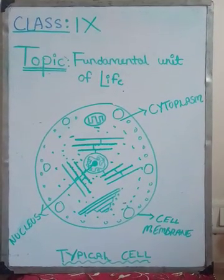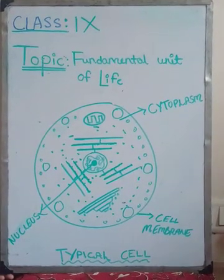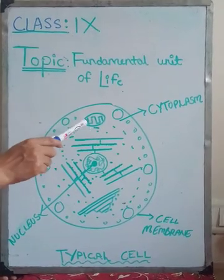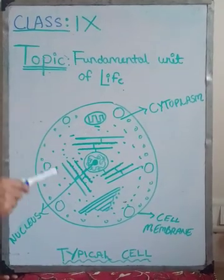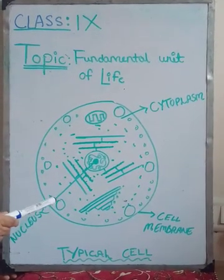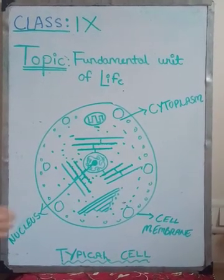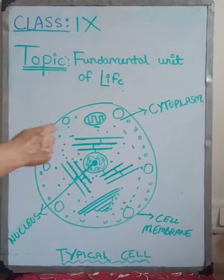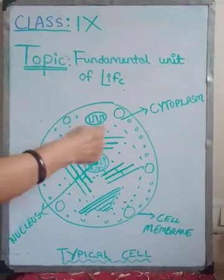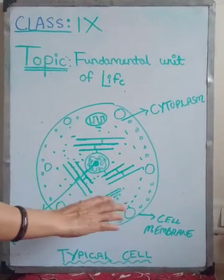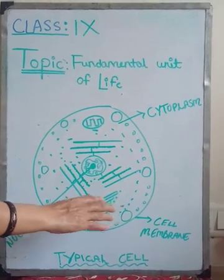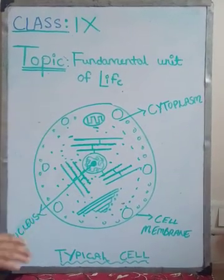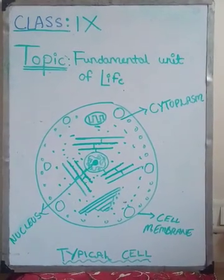Plasmolysis. Now we are going to understand plasmolysis. When a living plant cell loses water through osmosis, there is the shrinkage or contraction of the contents of the cell away from the cell wall. This phenomenon is called plasmolysis.